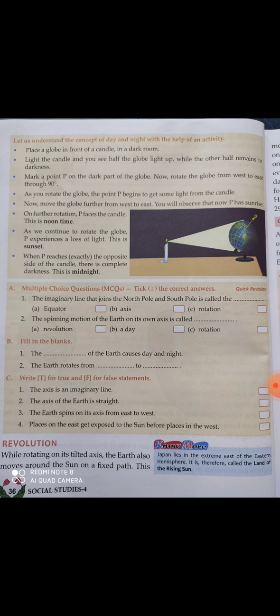First, you need a globe and a candle. Place the globe in front of a candle in a dark room — the room has to be dark, meaning the lights should be off. Like the way it is shown in the picture, place the candle and the globe. Light the candle and you will see half of the globe light up while the other half remains in darkness.